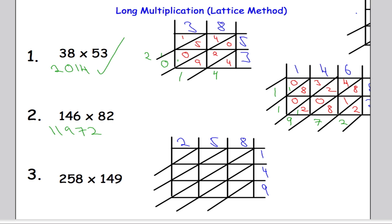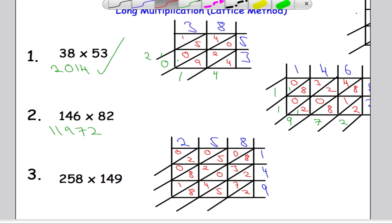8 times 1 is 8 — 0 tens, 8 units. 8 times 4 is 32 — 3 and 2. 8 times 9 is 72 — 7 and 2. 5 times 1 is 5 — 0 and 5. 5 times 4 is 20 — 2 and 0. 5 times 9 is 45 — 4 and 5. 2 times 1 is 2 — 0 and 2. 2 times 4 is 8 — 0 and 8. 2 times 9 is 18 — 1 and 8. That's all the multiplication done.